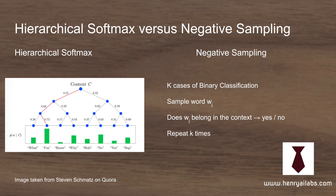In Word2Vec they say you don't really need hierarchical sampling, so they treat it as a binary classification problem. They draw negative samples — sampling negative words with respect to the context word — and just ask: does this word belong to the context, yes or no? They repeat the negative sampling k times. They also study how large k has to be depending on dataset size: five to twenty for small datasets, and two to five for large datasets.